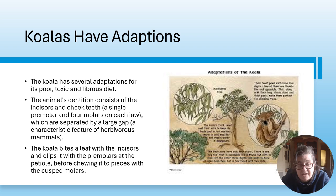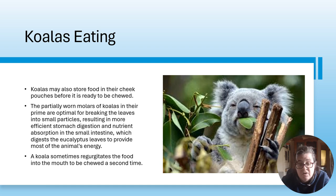Koalas have adaptations for their poor, toxic and fibrous eucalyptus diet. Their dentition consists of incisors and cheek teeth including a single premolar and four molars, classical of herbivorous mammals. The koala bites a leaf with its incisors, clips it with premolars at the petiole, then chews it to pieces with cusped molars. The well-worn molars in their prime are optimal for breaking leaves into small particles, resulting in efficient stomach digestion and nutrient absorption. Koalas sometimes regurgitate food into the mouth and may chew it a second time.